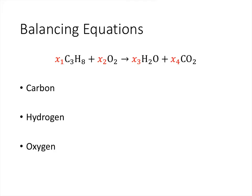So saying that the number of carbon atoms on the left-hand side should equal the number of carbon atoms on the right-hand side, well, the number of carbon atoms on the left-hand side is whatever number we find for x1 multiplied by 3. So 3x1, and that's going to equal the number of carbon atoms on the right-hand side, which is whatever number x4 we find multiplied by 1 because there's just the 1 carbon atom there. So 3x1 would have to equal x4.